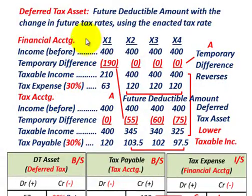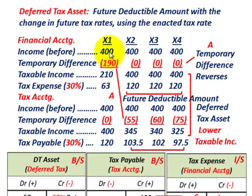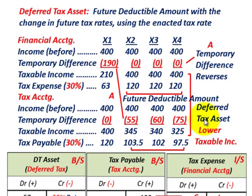Now let's look at the deferred tax asset. The deferred tax asset is a future deductible amount, and again we're going to look at how it's affected with future tax rates using the enacted tax rate. For financial accounting, the total $190,000 is deducted in the first year, and for our tax accounting this temporary difference reverses itself over the next three years — no deductions in the first year, but we're able to deduct the $190,000 over years X2 through X4. That's what we call a future deductible amount, and that gives us a deferred tax asset.